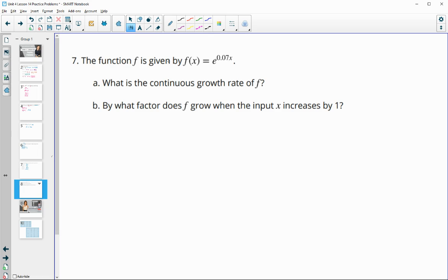Number seven, the function f is given by f of x equals e to the 0.07x. So what is the continuous growth rate? The continuous growth rate is this 0.07 or as a percent 7%.